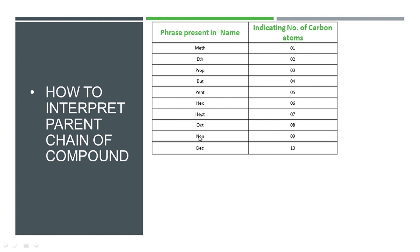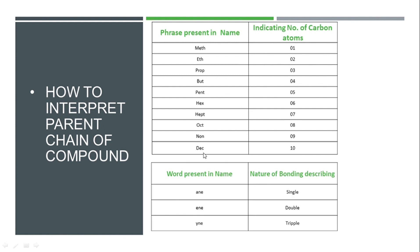So this is how we identify the number of carbon atoms in any compound given by name — we observe which prefix phrase is present. If the last three alphabets are 'ane,' that indicates only single bonds present between the carbon atoms. If 'ene' is present, that indicates at least one carbon-carbon double bond is present, whose position is also given in the IUPAC name. If 'yne' is present, that indicates at least one carbon-carbon triple bond is present.